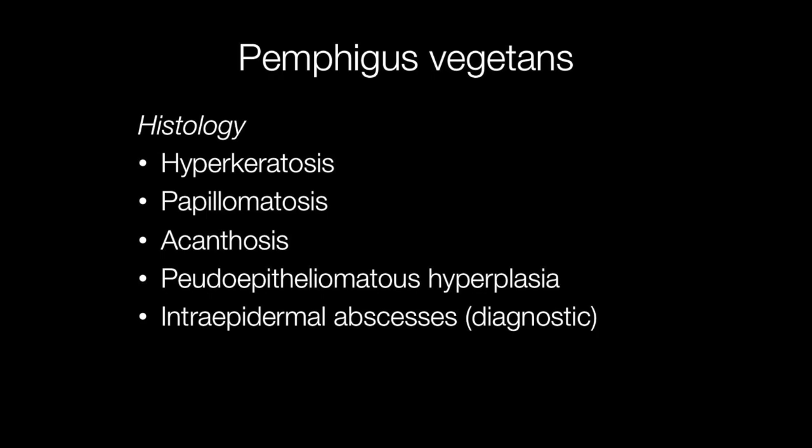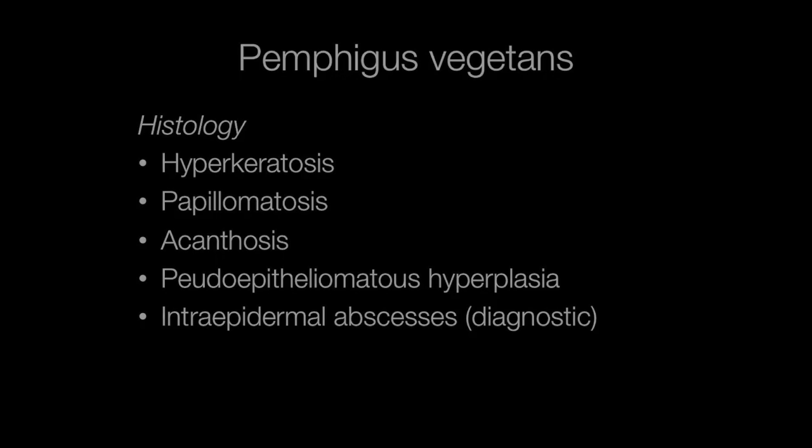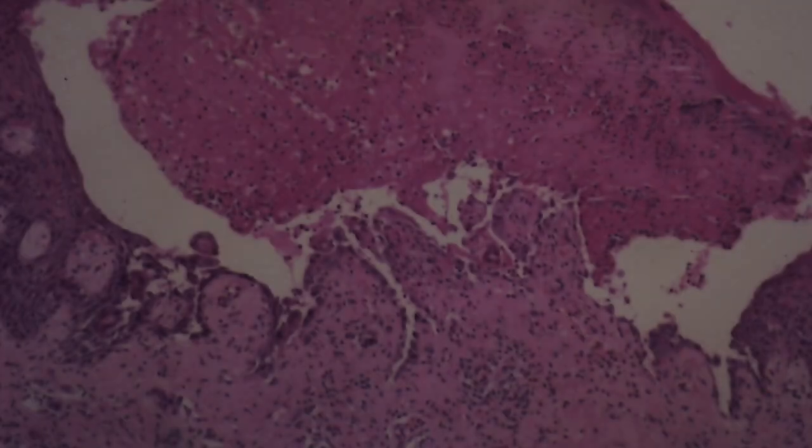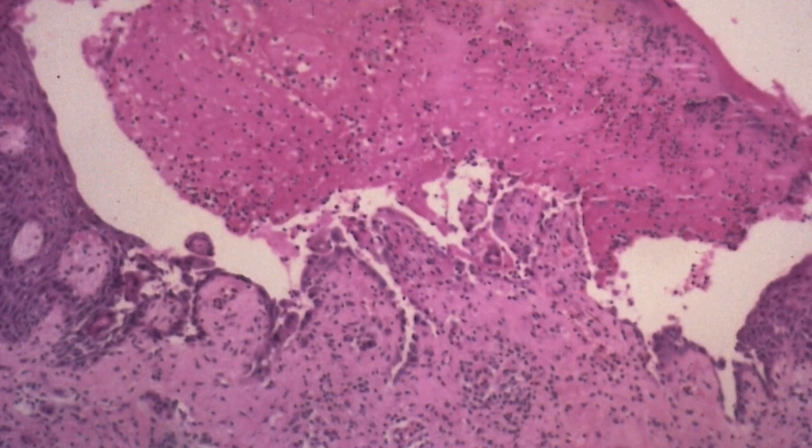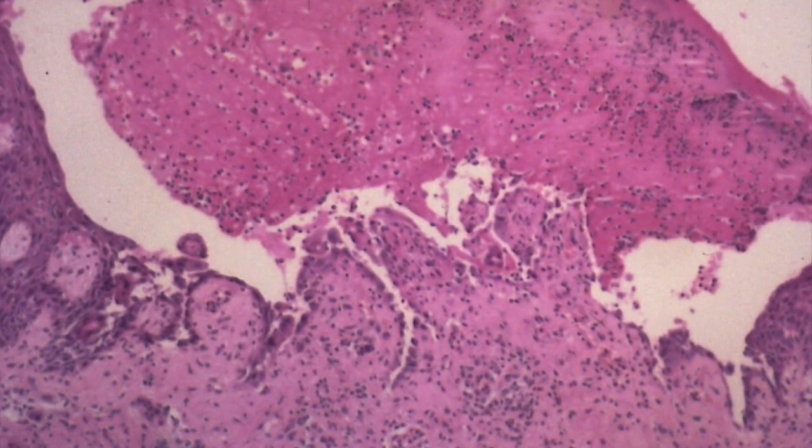The histological features of pemphigus vegetans are hyperkeratosis, papillomatosis, acanthosis, and pseudoepitheliomatous hyperplasia. Within the epidermis there are abscesses, and this is a diagnostic feature of pemphigus vegetans.